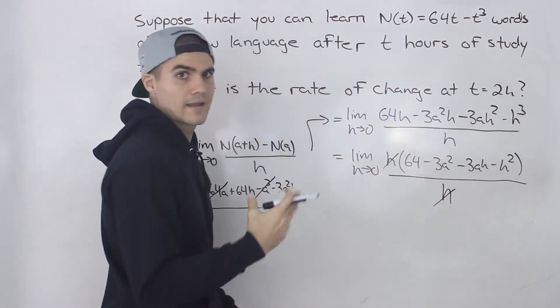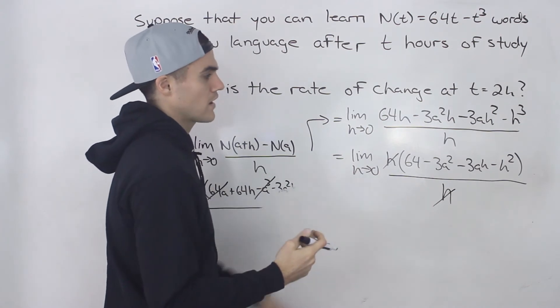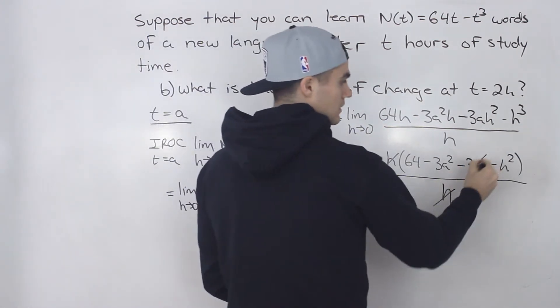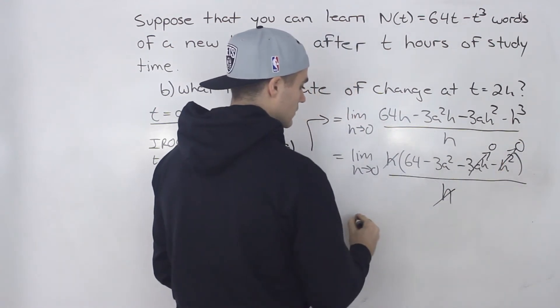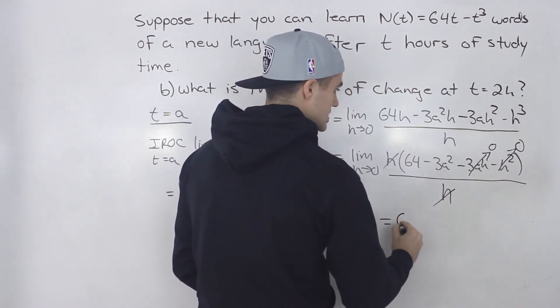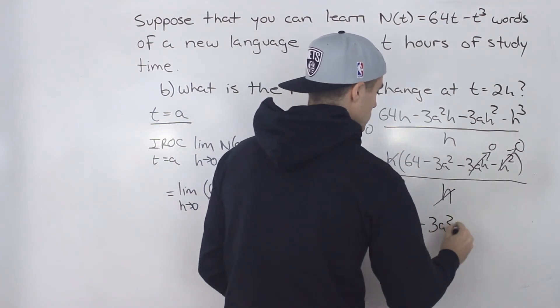Now the h's cancel out, and now we can finally plug in 0 for h. And when we do that, this will go to 0, this will go to 0 as well, and we're just left with 64 minus 3a squared.